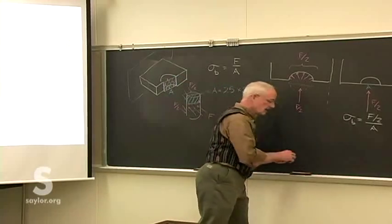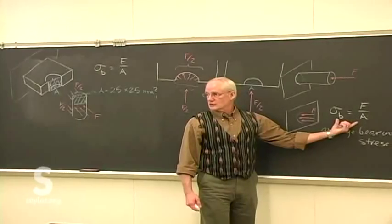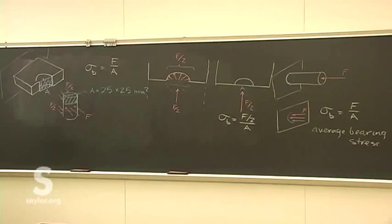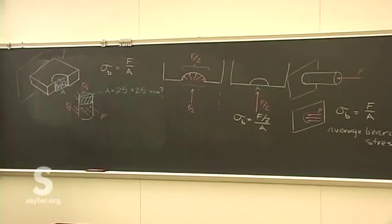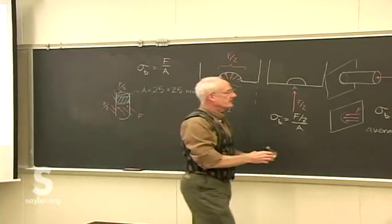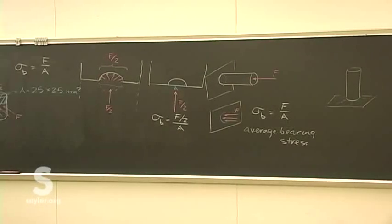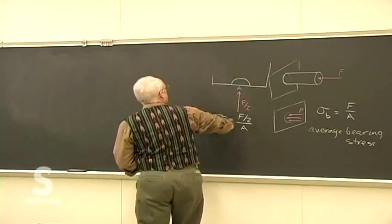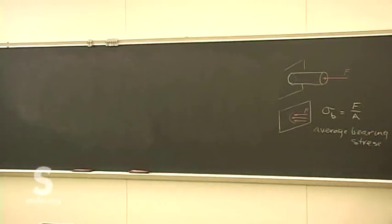Generally, bearing stresses are not the sources of catastrophic failure we're most worried about. It's much more likely that structures will fail in normal stress or shear stress, or some combination. So we're not as worried about bearing stress — it's harder to visualize than calculate, but the calculation comes out quite simple in the end. That wraps things up for this diagram.